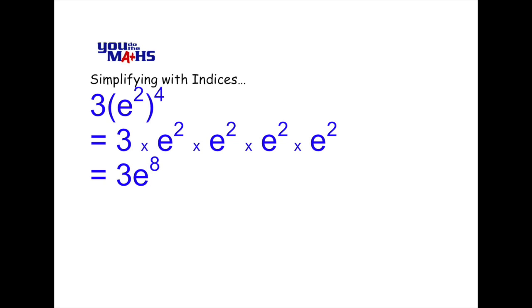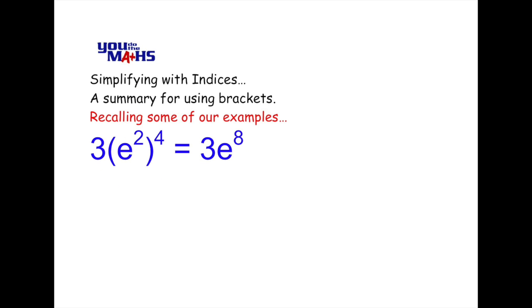Let's have a look at those examples again. Notice here we've got 3 outside the bracket but everything inside the bracket is raised to a power 4. The end result is e to the 8. In this next problem everything inside the bracket is to the power 3. So 3 actually is to the power 3, that becomes 27, and k squared to the power 3 becomes k to the 6.